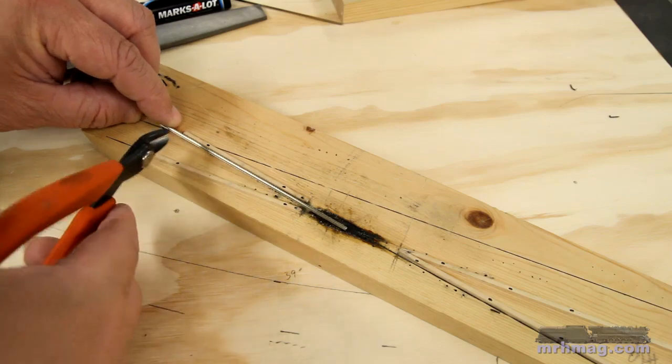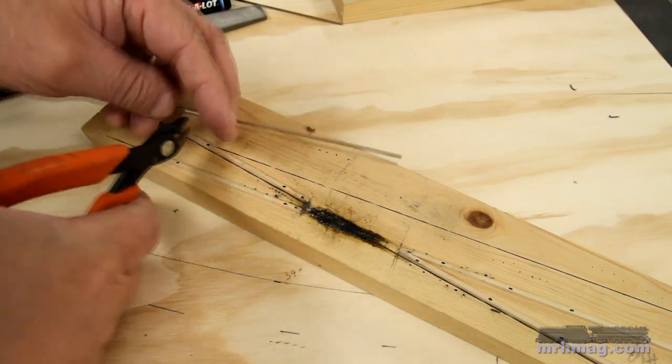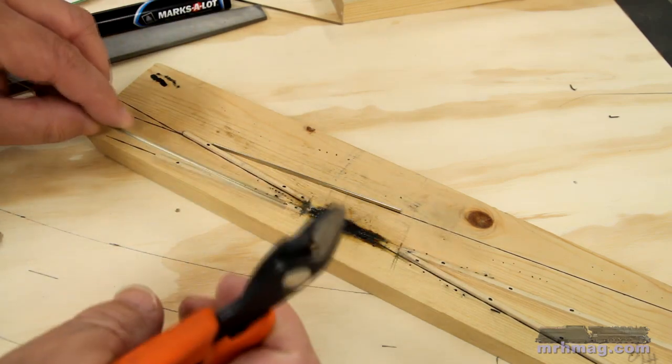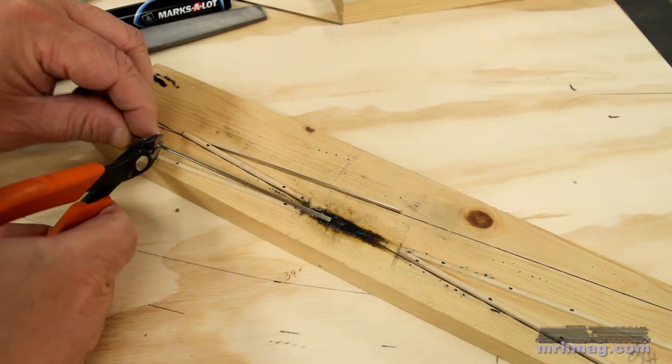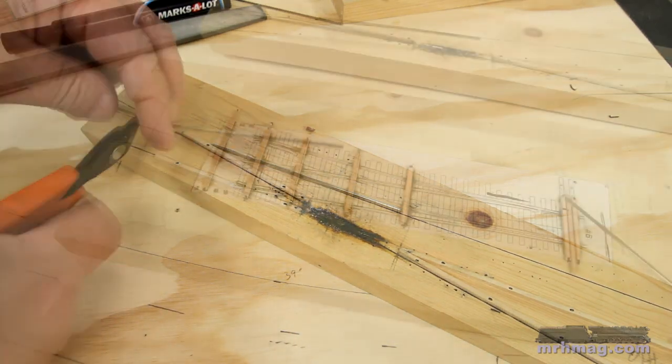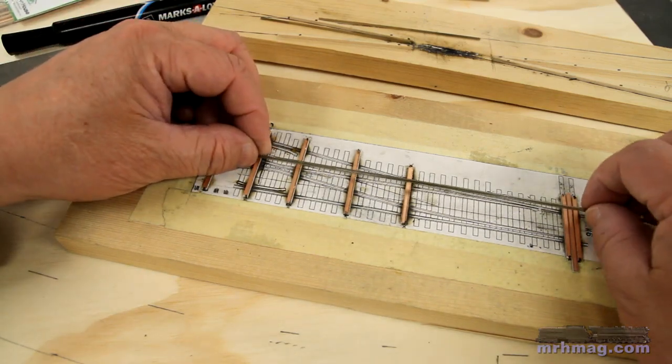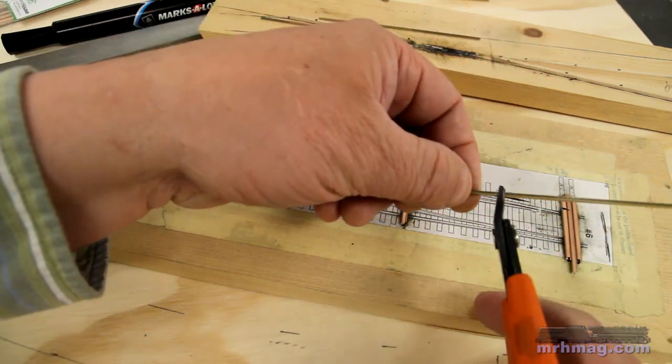I cut two pieces of rail to form the V of the frog. Then I hold some rail over the turnout template and cut pieces for the closure rails. I cut the closure rails longer than needed. I'll trim them later.